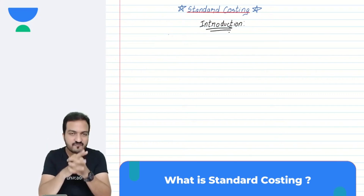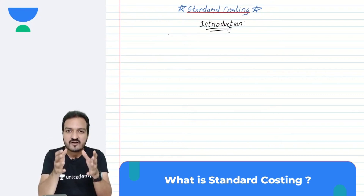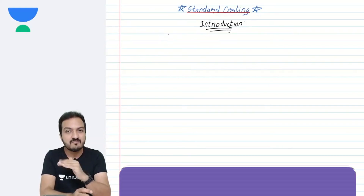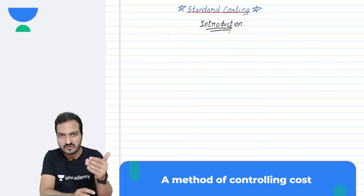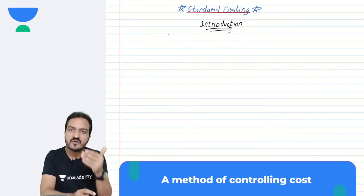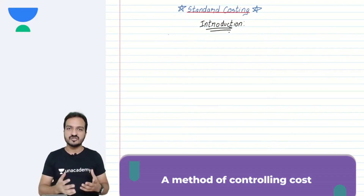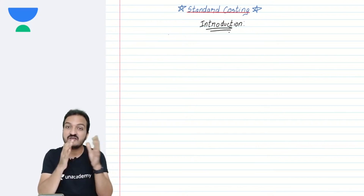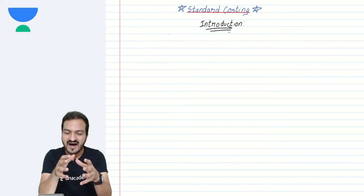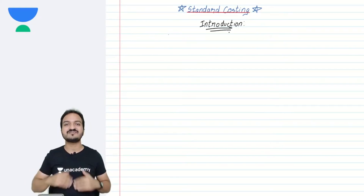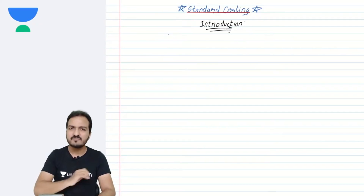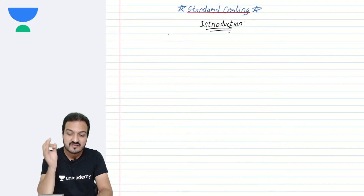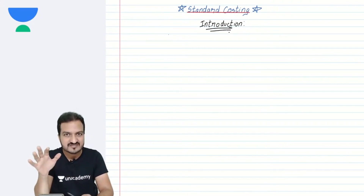What exactly is standard costing? In short, standard costing is a method of cost control. Every company makes a budget — a budget for their costs and a budget for their revenues. At the beginning of the year when they make a budget, are they absolutely sure what is going to happen during the year? No, they will make the budget based on the best possible estimate.